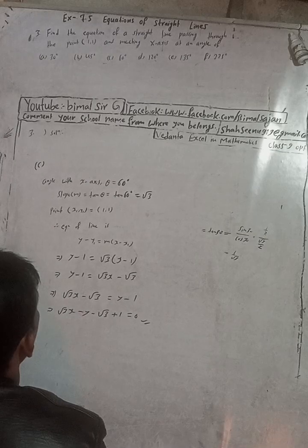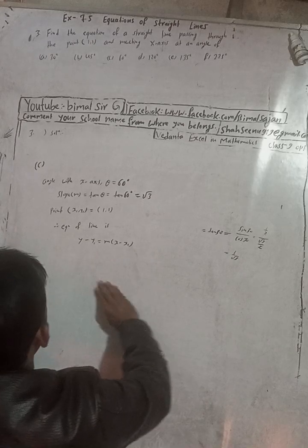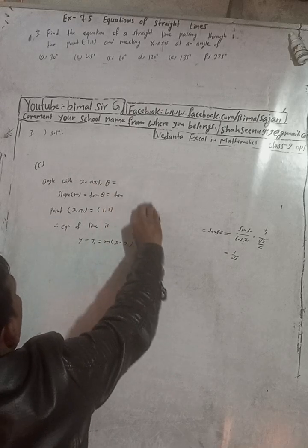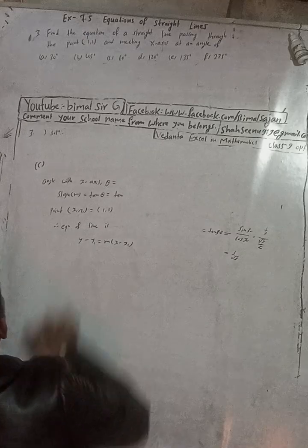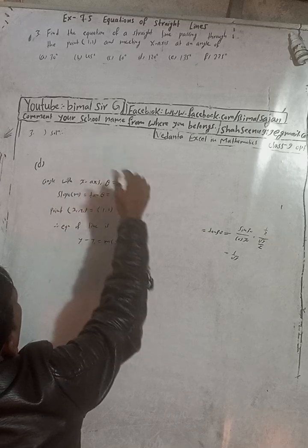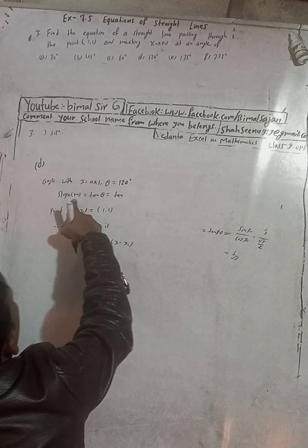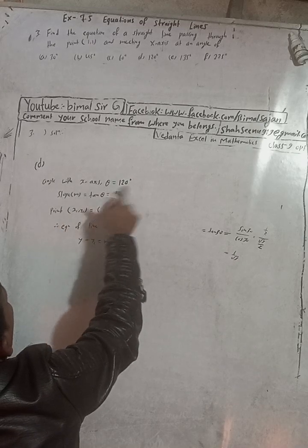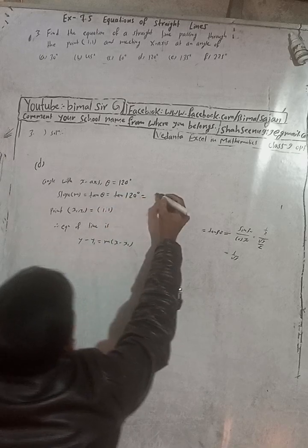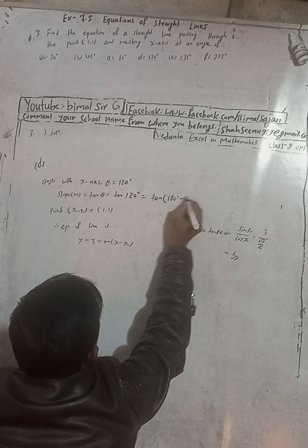For part (d), the angle with the x-axis is 120 degrees, taken in the positive direction. Slope m equals tan theta equals tan 120 degrees. This can be written as tan(180 minus 60) degrees. Using the CAST rule, 120 degrees is in the second quadrant.